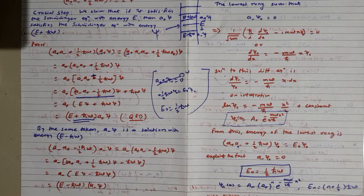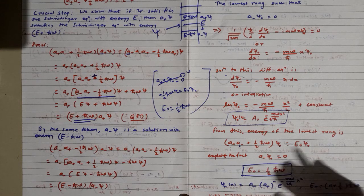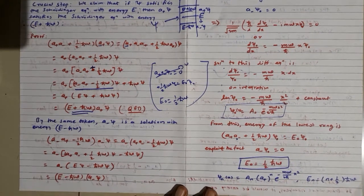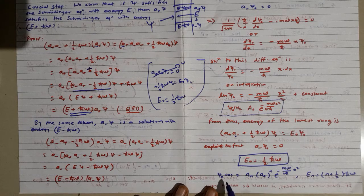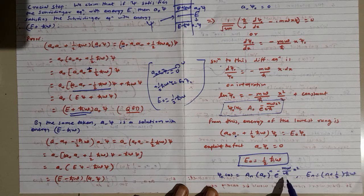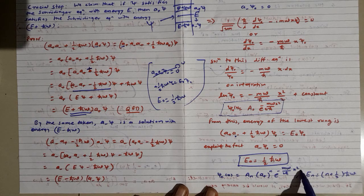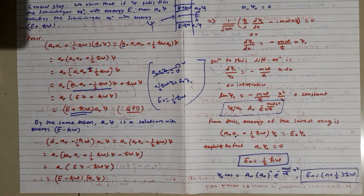By applying the raising operator a₊ repeatedly to ψ₀, we can find any state in the ladder. The nth rung wave function is ψₙ(x) = Aₙ(a₊)ⁿ e^(-mω/2ℏ · x²), where Aₙ is a normalization constant. The corresponding energy of each level is Eₙ = (n + ½)ℏω. This is the energy spectrum of the simple harmonic oscillator.